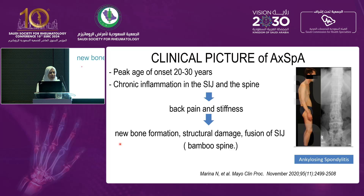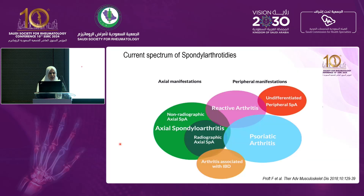Chronic inflammation of the sacroiliac joints and the spine leads to back pain and stiffness. Over time, there will be new bone formation, structural damage, and fusion of the sacroiliac joint with the axial spine, giving the characteristic pattern of bamboo spine.